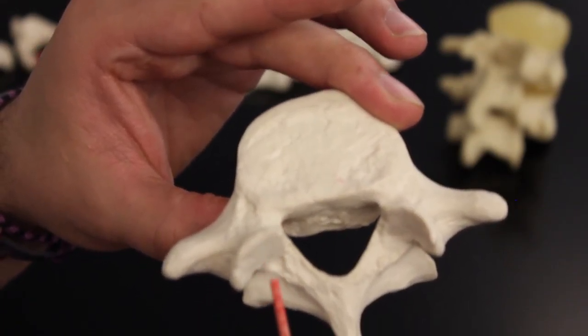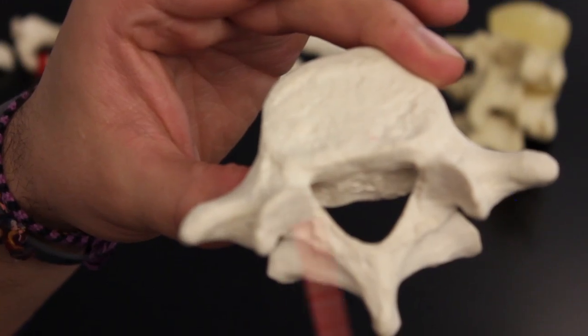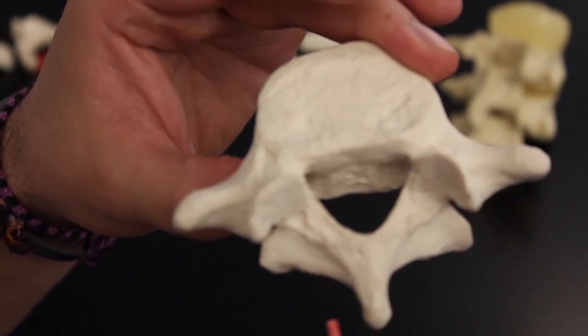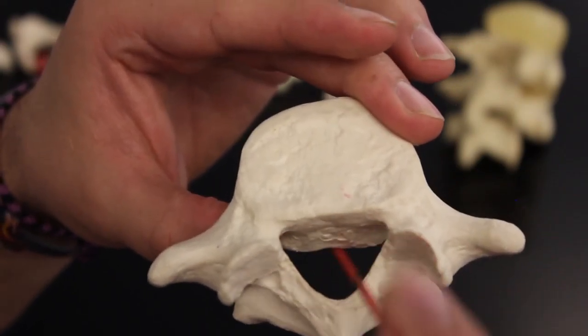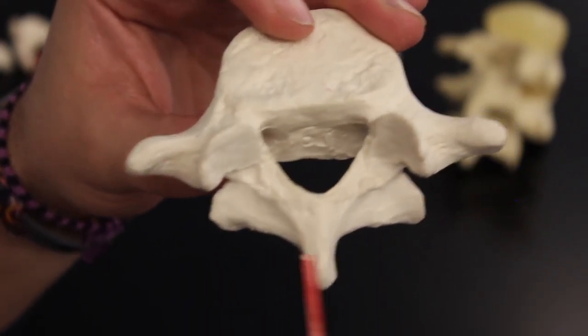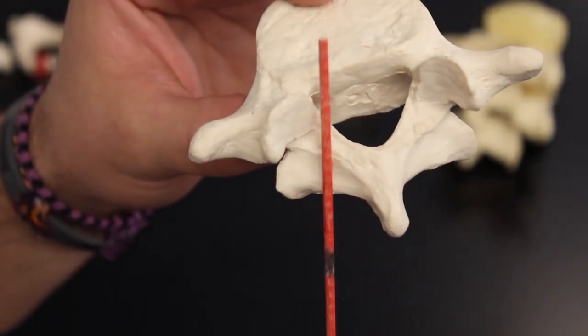Your superior articulating process with facets right there, and again here's our spinous process. Spinous process, vertebral foramen. And then, here's actually a better way - I would actually rather you look at the lamina and the pedicle on this one.